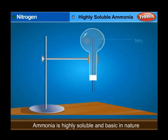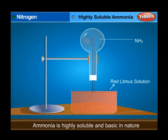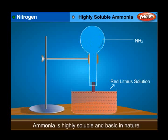Highly soluble ammonia experiment: Take a 1-litre round-bottomed flask filled with dry NH3, fitted with an air-tight cork through which passes a glass tube with a jet at the end. The other end of the tube is dipped in water containing red litmus solution. A few drops of water pushed into the flask dissolve the ammonia gas, creating a partial vacuum. Soon the water rushes into the flask in the form of a blue fountain, proving that ammonia is highly soluble and basic in nature.